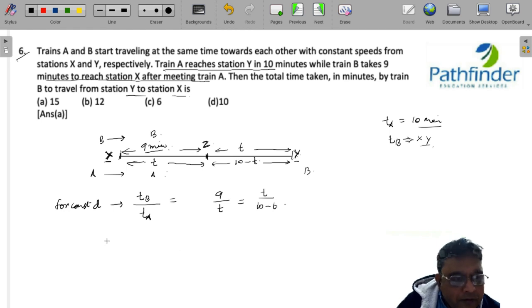What do you have? 9T minus 9 times T is equal to T square. You have a simple quadratic equation. T square plus 9T minus 90 is equal to 0. T plus 15 into T minus 6 is equal to 0. So T is equal to 6 minutes.